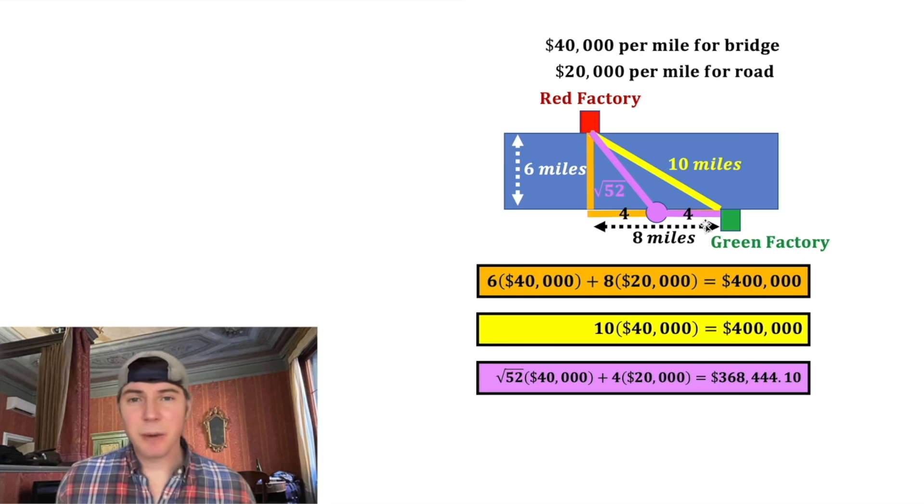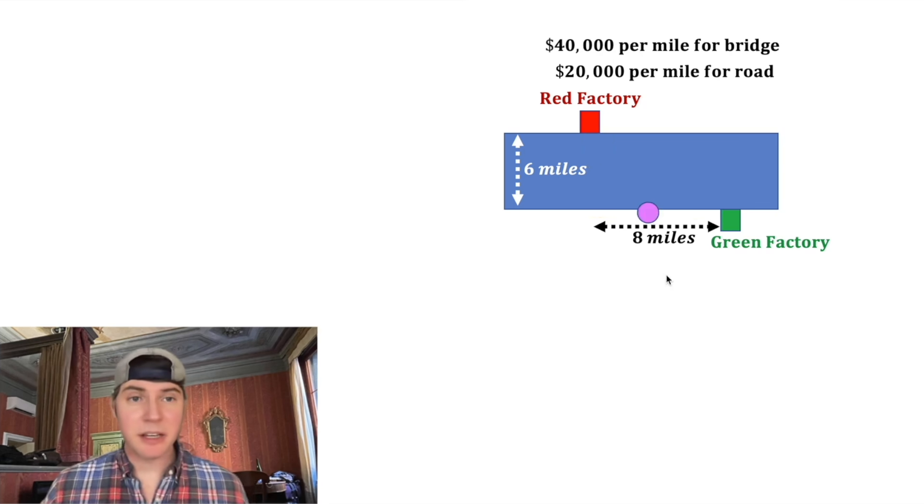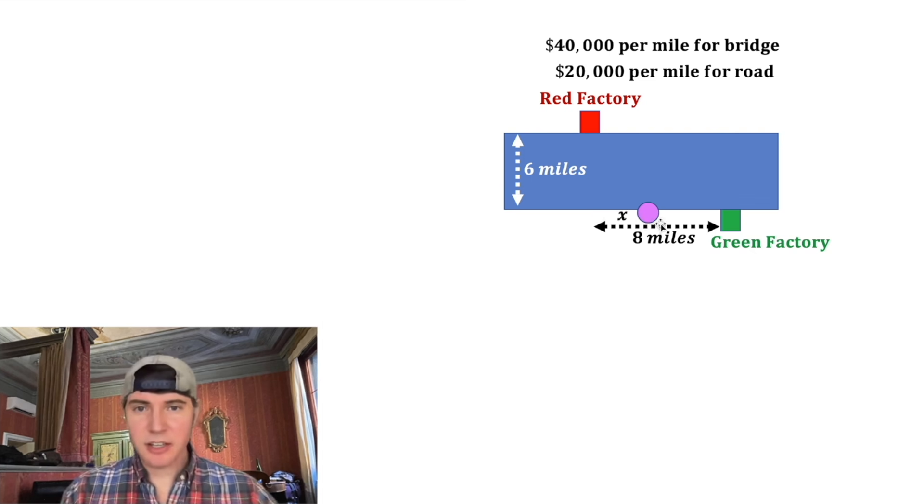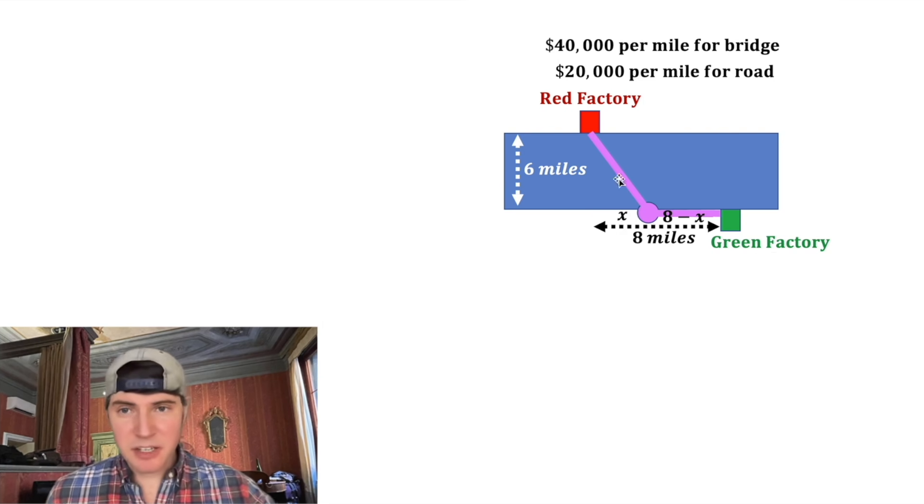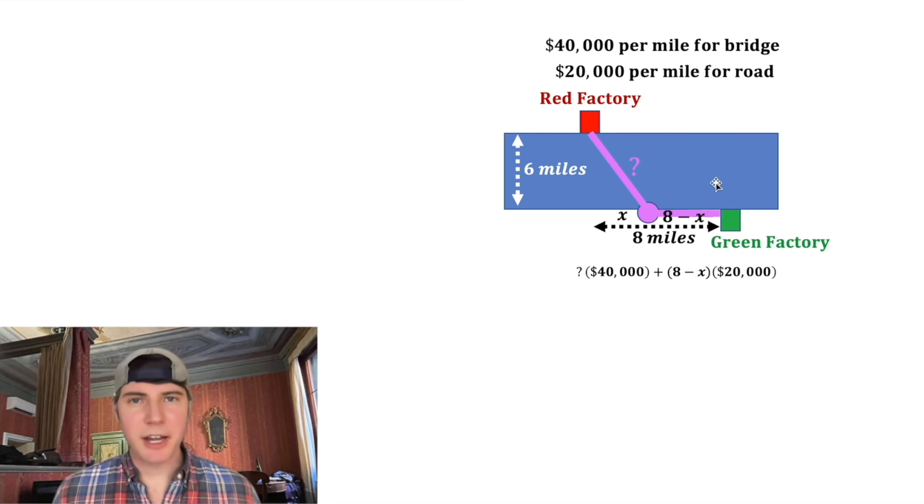But let's find the spot that costs the least amount of money. We're going to pick a random pink dot this time and we'll call this distance x, and then the rest of this would be 8 minus x. We want to find the value of x that makes this pink path the lowest possible cost. The road is going to be (8 - x) times $20,000 and then $40,000 times the length of the bridge.